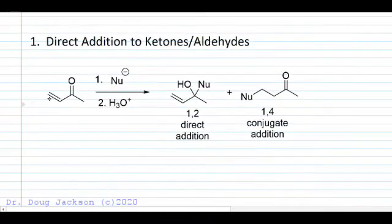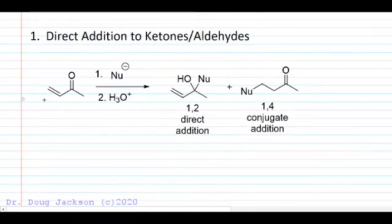If we look at this example ketone, we see the difference between a 1,2 direct addition and a 1,4 conjugate addition. We call position 1 the carbonyl oxygen to define the diene system. So 1,2,3,4, that's the alpha-beta conjugated ketone. There's a couple ways to label it: 1,2,3,4, the alpha and beta positions.